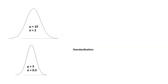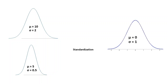The special thing about the standard normal distribution is that any type of normal distribution can be transformed to it. It means that any other normal distribution with any value of mu and sigma can be transformed to the standard normal distribution, where you have a mean of 0 and a standard deviation of 1. This conversion process is called standardization.